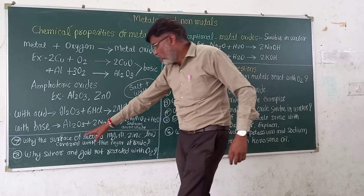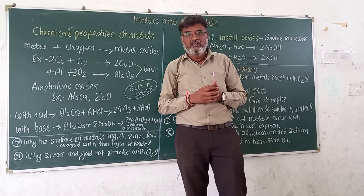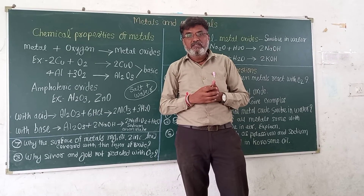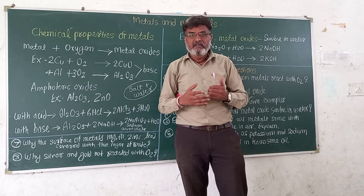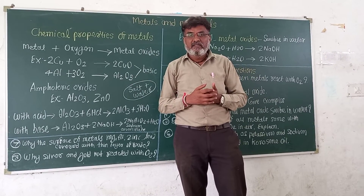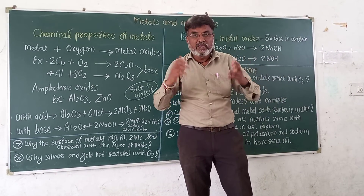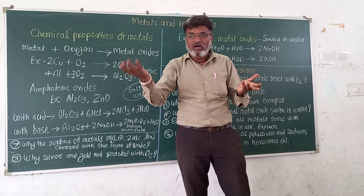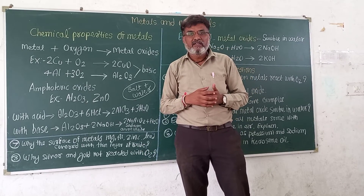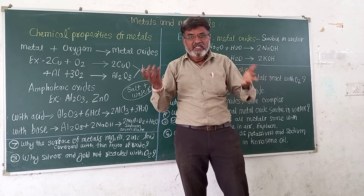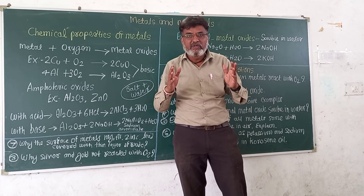Why are silver and gold not reactive? Silver and gold are generally used to make ornaments — they are costly metals. They do not react with O2. There is no effect such as iron corrosion or copper oxide formation. The reason is very simple: silver and gold are less reactive metals.